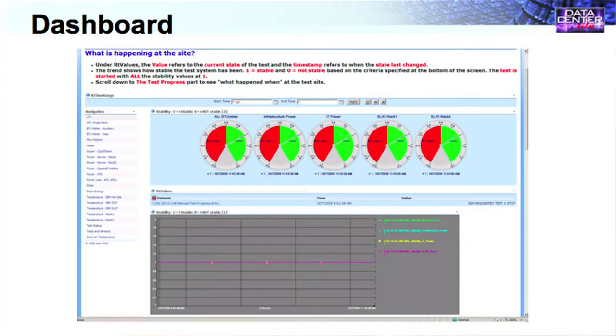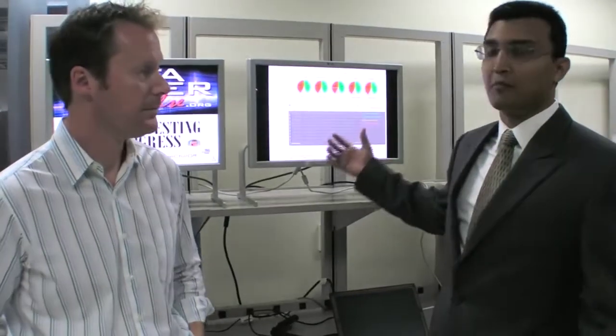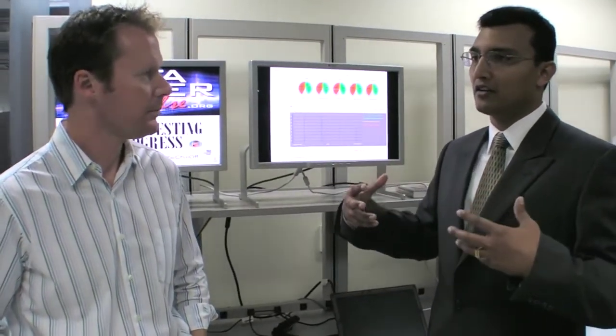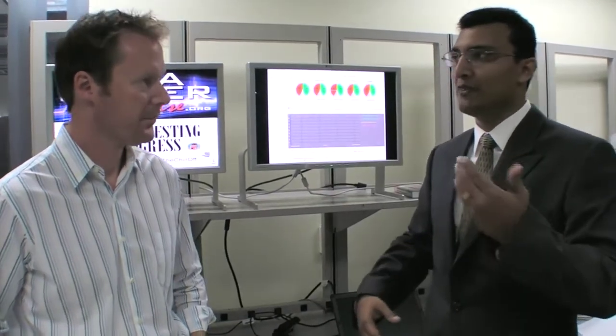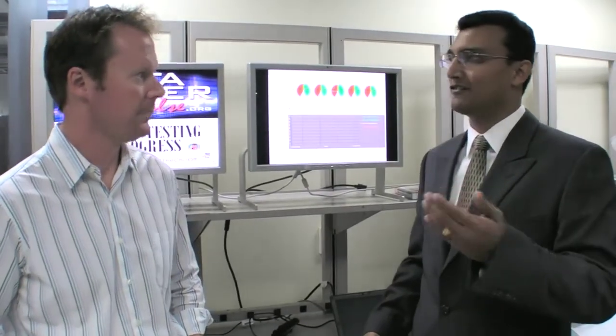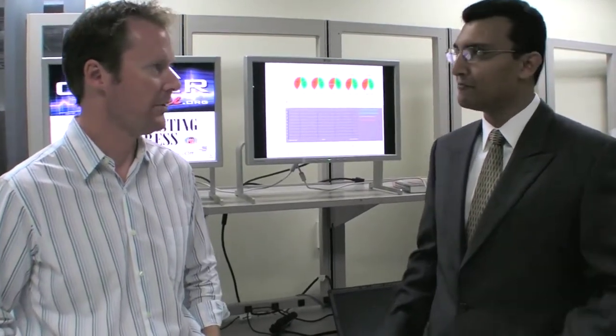So this dashboard, the top dial gauges show whether the system is stable. If it is green, then it is stable. And the test engineers are supposed to start a particular test when all the dial gauges are green. So we are pulling in many different data. But then, this is an easy way of showing that a system is stable. We are doing calculations at the back.